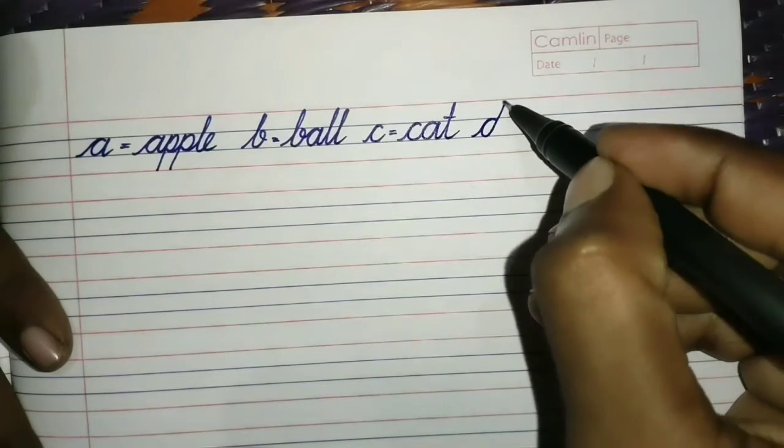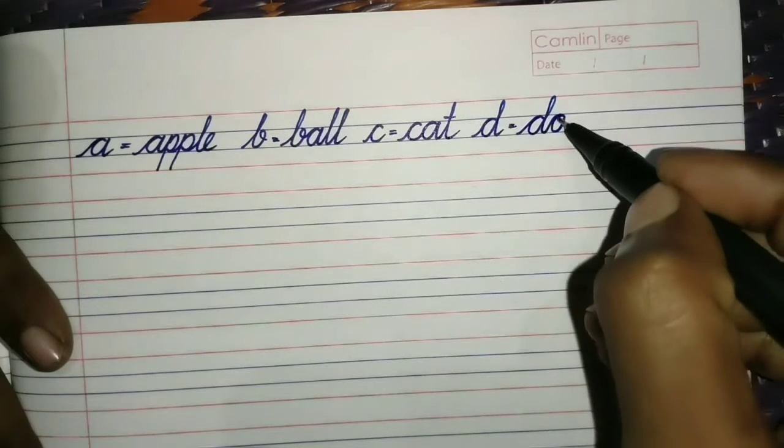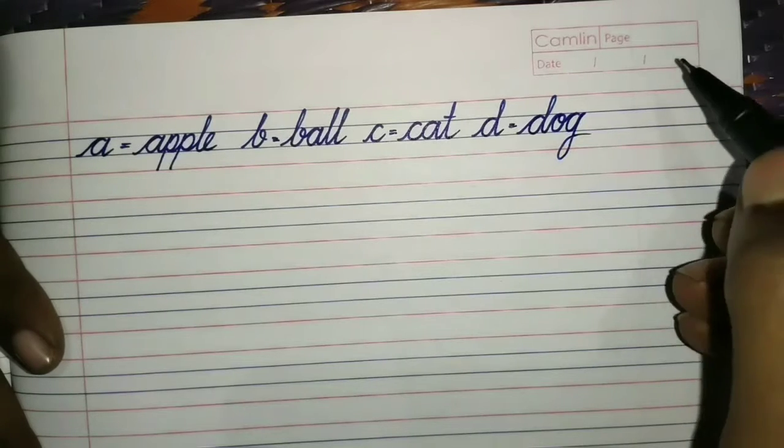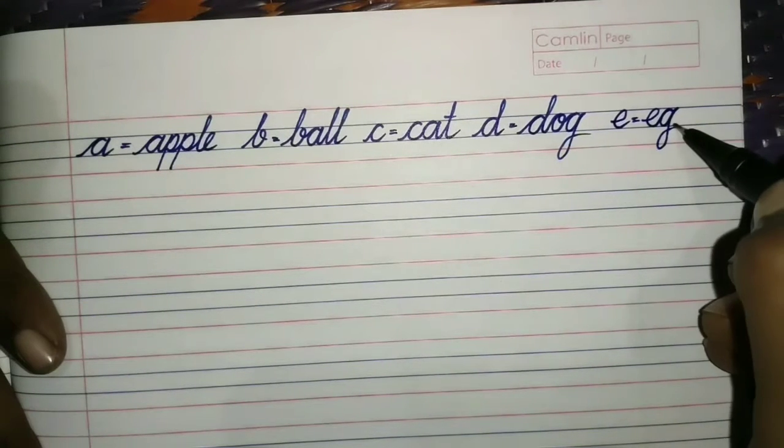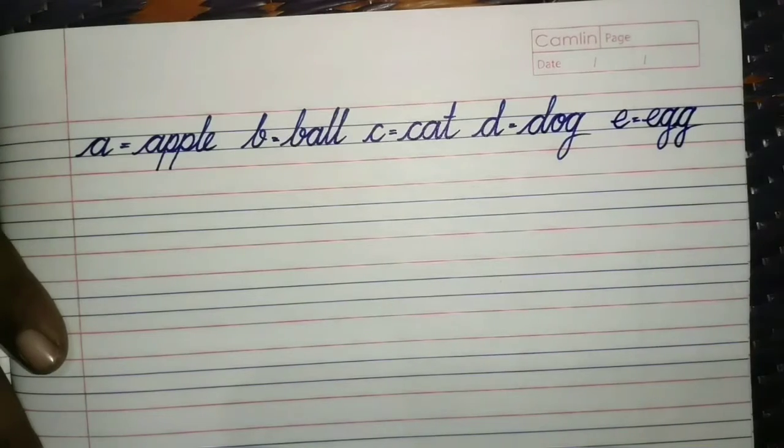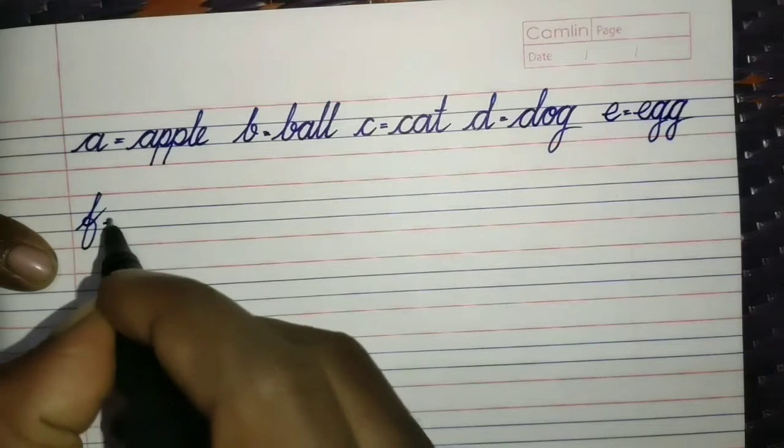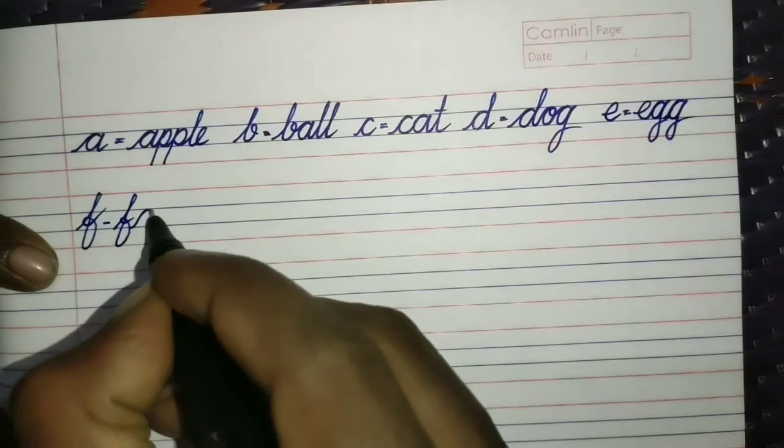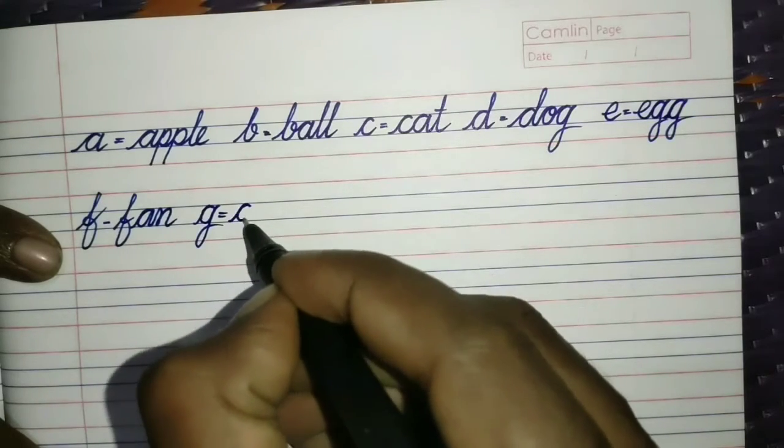D for Dog. D, O, G. Dog. E for Egg. E, G, G. Egg. F for Fan. F, A, N. Fan.